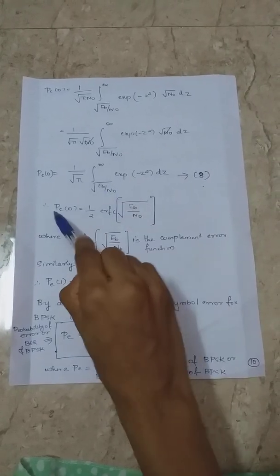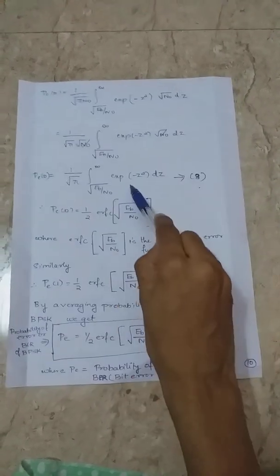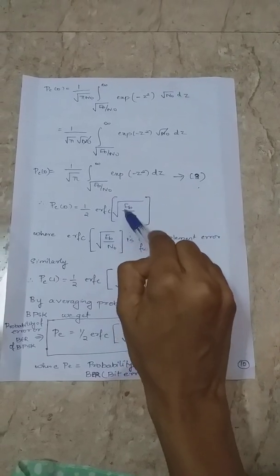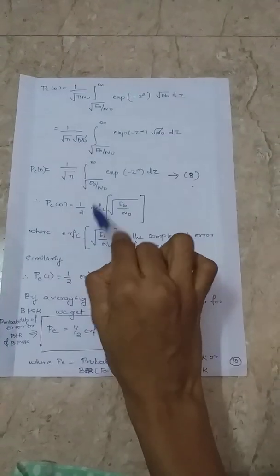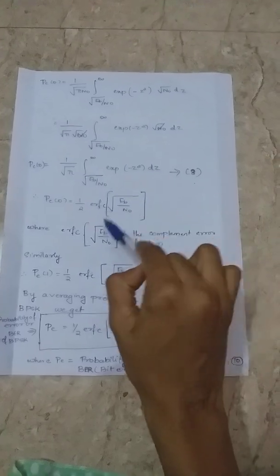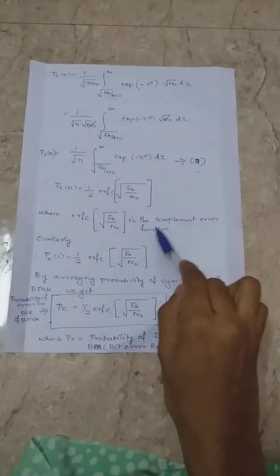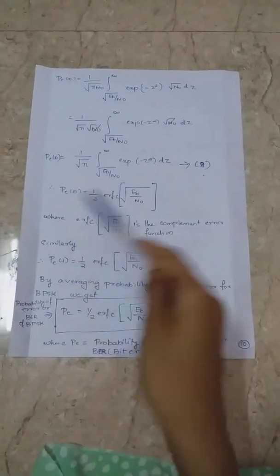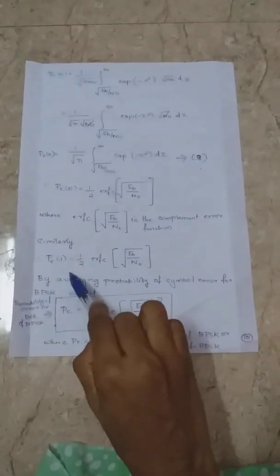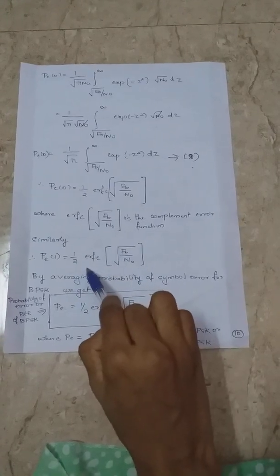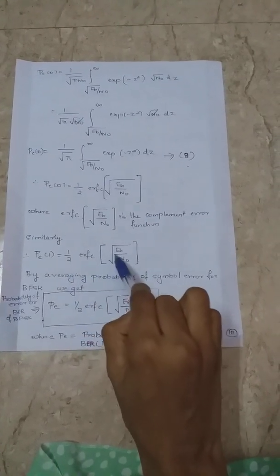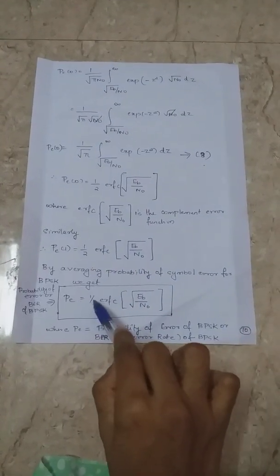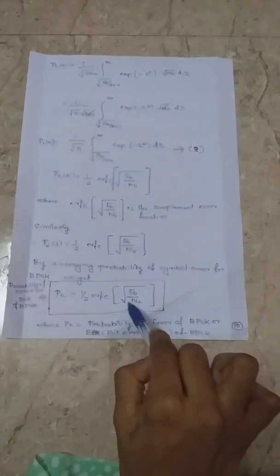This gives the value of Pe(0). It is one-half times the complementary error function of root (Ep over N0). Therefore, the final value of Pe is one-half times erfc of root (Eb over N0).